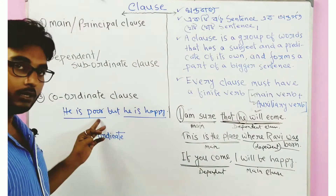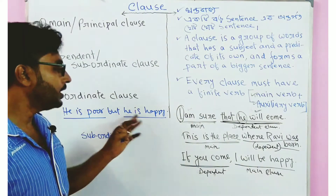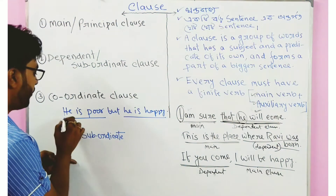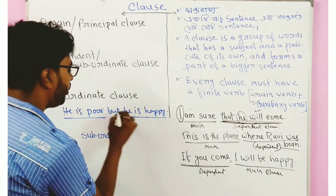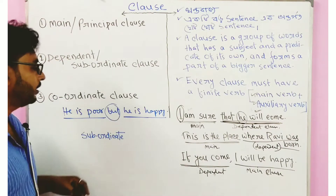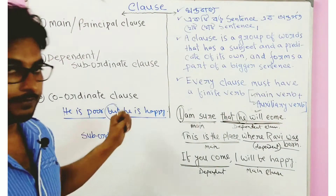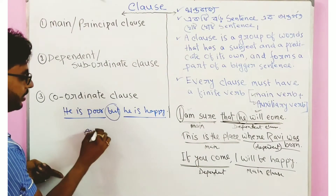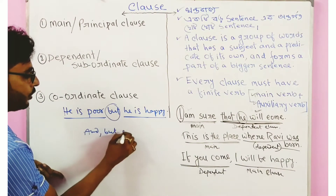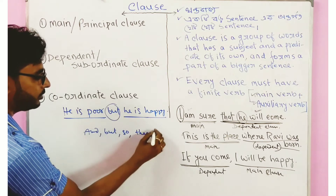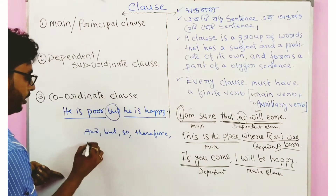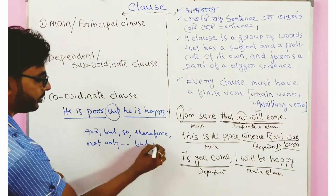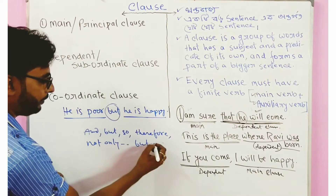For example: 'He is poor but he is happy.' This is called a coordinate clause. In coordinate clauses, the conjunctions used include: and, but, so, therefore, not only but also.